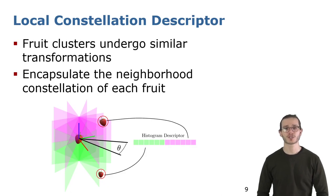For the local constellation descriptor, we started with observation that fruit clusters undergo similar transformation, which means that strawberries on the first section is likely to be surrounded by a similar number of strawberries in the second section. For this reason, our goal is to encapsulate the neighborhood constellation of each fruit by storing the positions and density of surrounding strawberries.